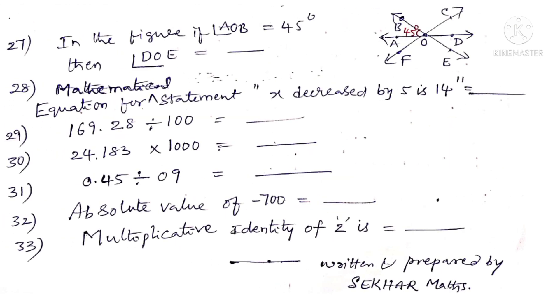Now 27th question. In the figure angle AOB is equal to 45 degrees. Then angle DOE is equal to dash. Observe that ADBECF are the intersecting lines. So vertically opposite angles are equal. So angle DOE is also equal to 45 degrees. So the answer is 45 degrees.